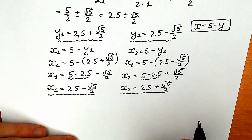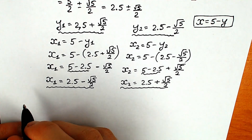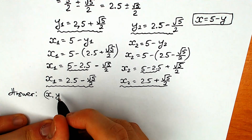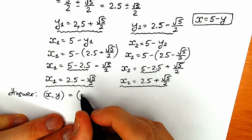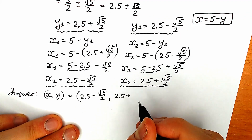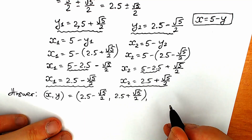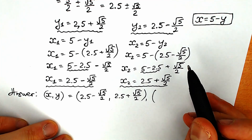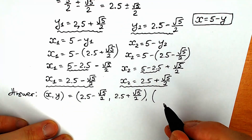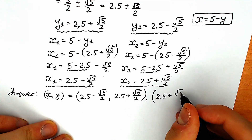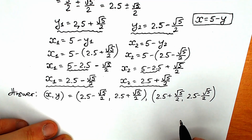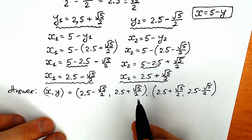So we've found both pairs of solutions. The first pair: x₁ equals 2.5 minus square root of 5 over 2, and y₁ equals 2.5 plus square root of 5 over 2. The second pair: x₂ equals 2.5 plus square root of 5 over 2, and y₂ equals 2.5 minus square root of 5 over 2. We can also express these as decimal approximations.